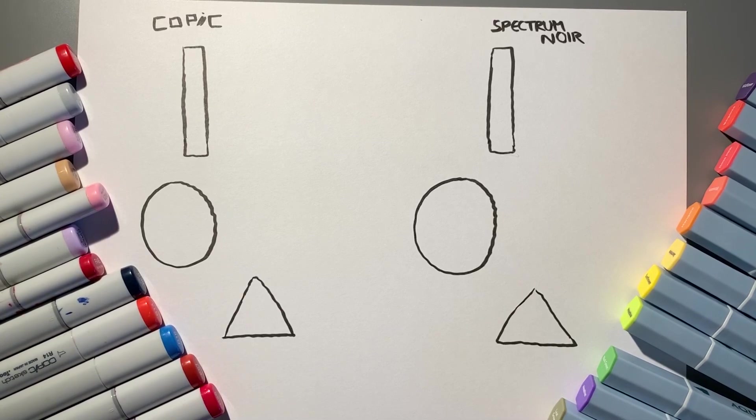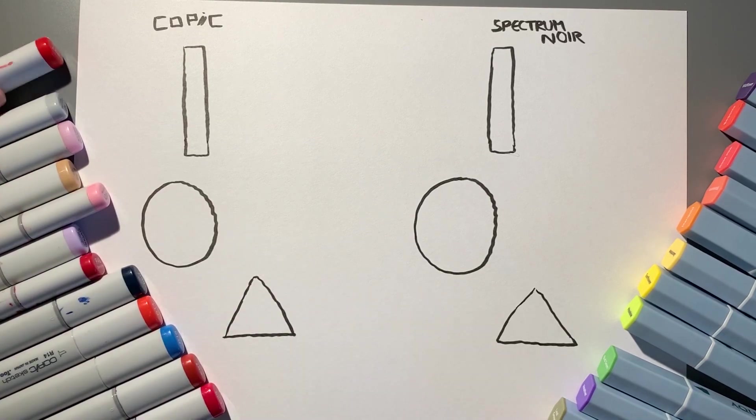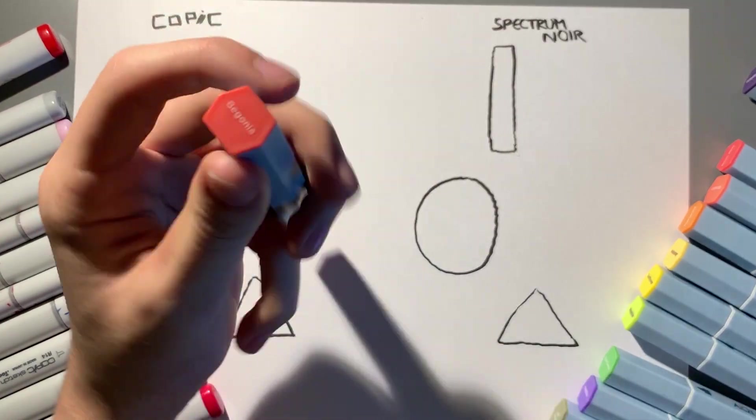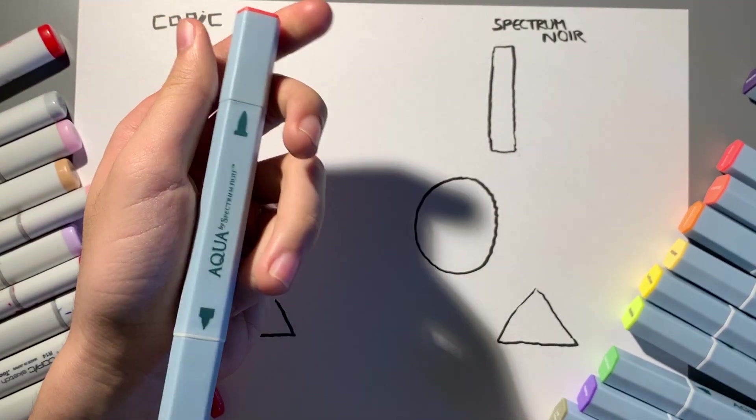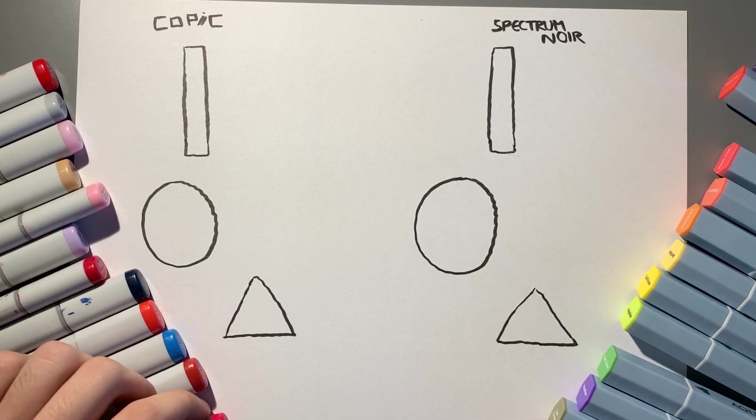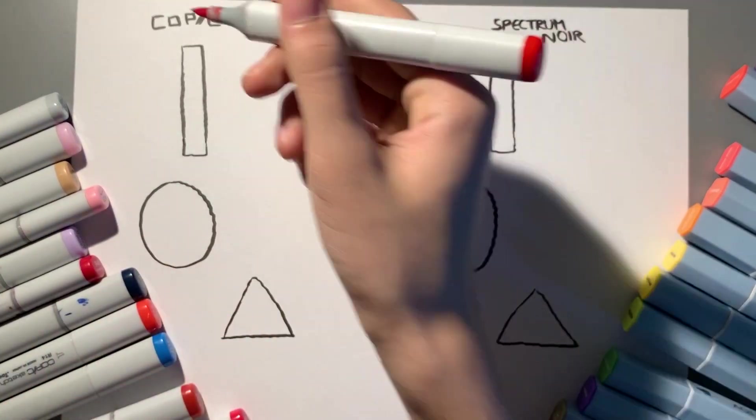I have prepared some shapes here that we can do some comparisons with to see the differences between an alcohol-based marker and a water-based marker. It looks like we have some similar colors here just to begin with. This is a begonia, so is it some type of red? Let's bring out a less vibrant red, R27. This is a cadmium red, one of my go-to reds.